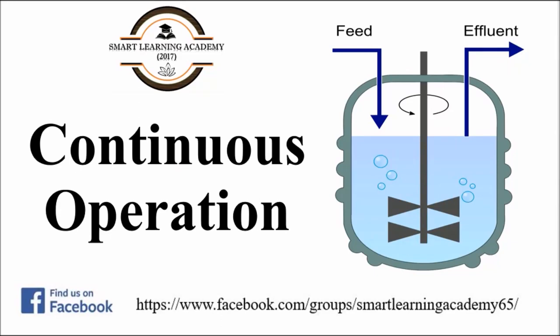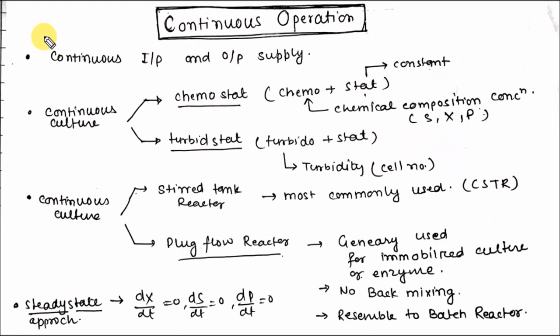Hello friends, my name is Viren Singh. In this video tutorial I am going to discuss continuous operations and various mechanisms in continuous operations. In continuous operation there is continuous input and output supply. Continuous culture can be divided into chemostat and turbidostat.